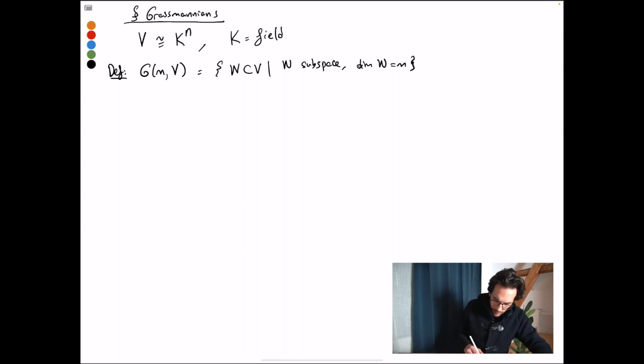then we can use a different notation for this. So if v is k^n, then we write G(m,n) for G(m,v).